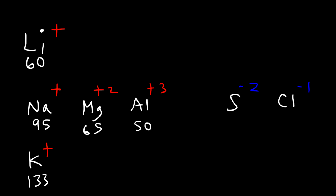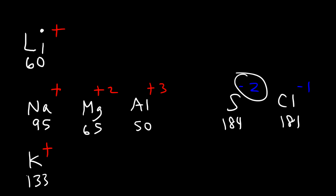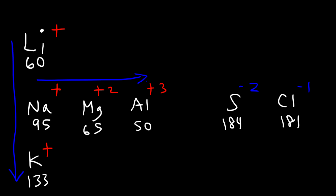The sulfide ion is 184 picometers, and chloride is 181. The ions with negative charges are a lot bigger than the ions with positive charges. In fact, the more positive the charge, the smaller the ion. The more negative the charge, the bigger the ion. That's a general trend. So ionic radii increases as you go down, and it decreases as you go to the right. However, as you cross from cation to anion, it's going to change.